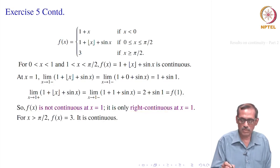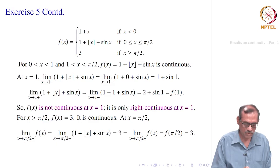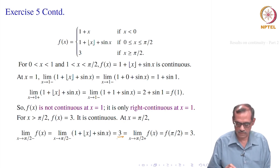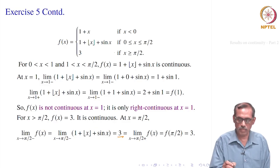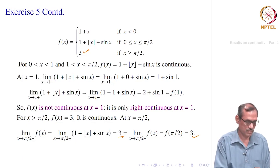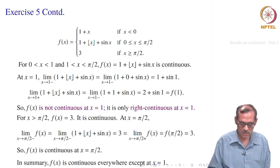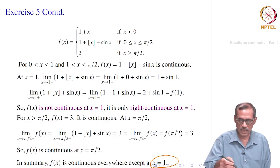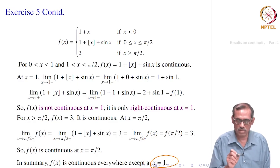For x > π/2, f is the constant 3, which is continuous. At x = π/2: the left-hand limit is lim(x→(π/2)⁻) (1 + ⌊x⌋ + sin x) = 1 + ⌊π/2⌋ + sin(π/2) = 1 + 1 + 1 = 3. Wait — ⌊π/2⌋ = 1, so 1 + 1 + 1 = 3. The right-hand limit from the third piece is 3. And f(π/2) = 3 as well. So f is continuous at π/2. In summary, f is continuous everywhere except at x = 1. In such problems, we must carefully examine all possible break points.